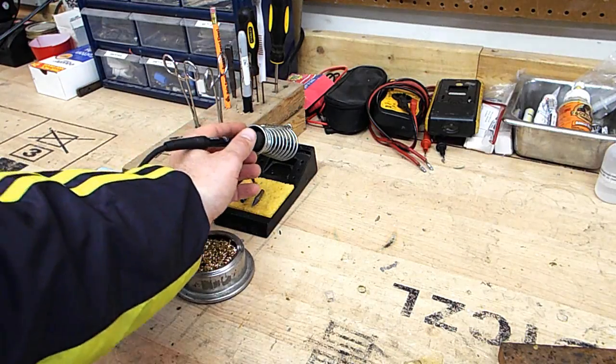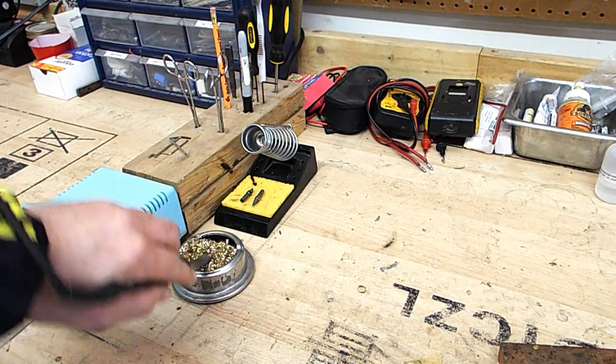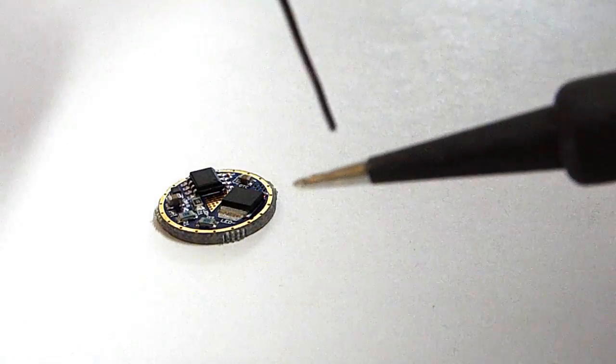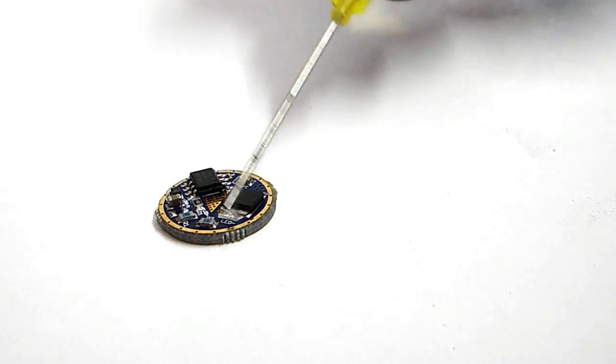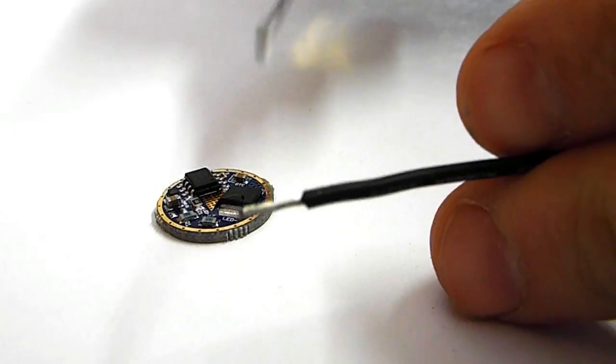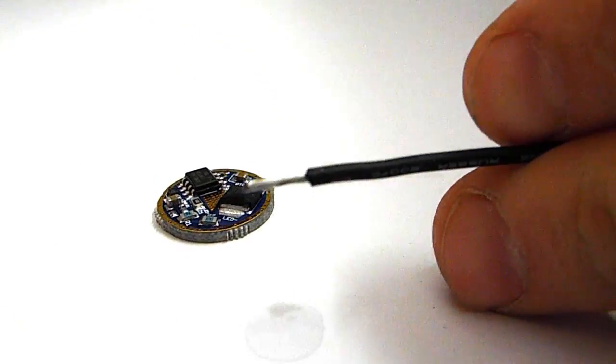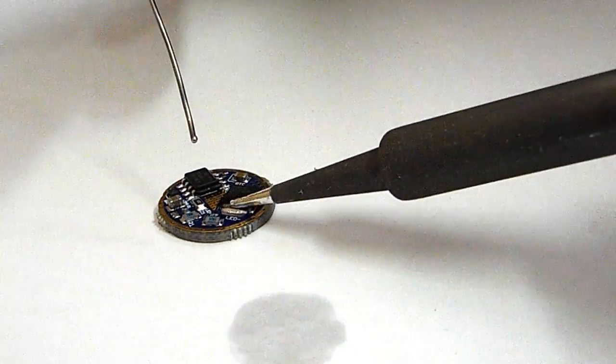Once your iron is fully heated, wipe the tip off, and then tin the end with some solder. Next, put flux on the areas you intend to solder, and then tin each of the parts.